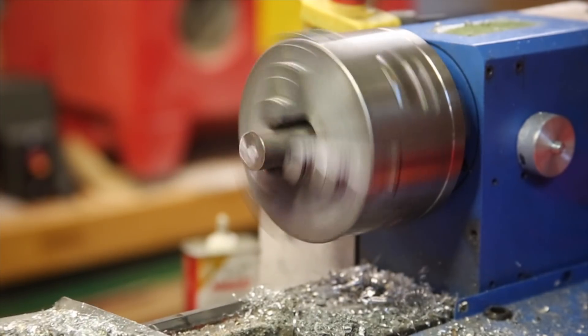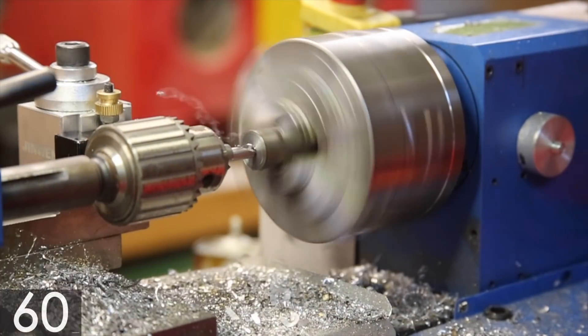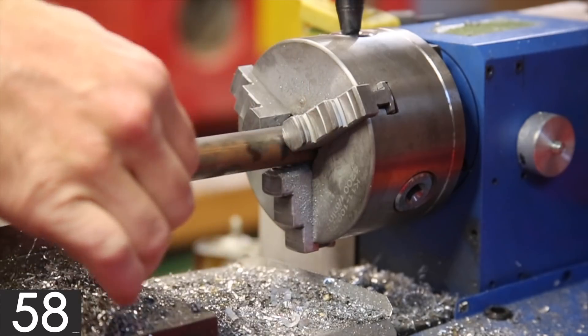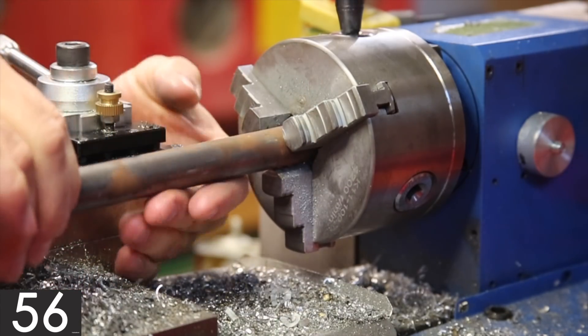This quick tutorial is how to get the tailstock on the mini lathe to be reasonably centered. I started by facing and center drilling a piece of three-quarter inch mild steel roundstock.